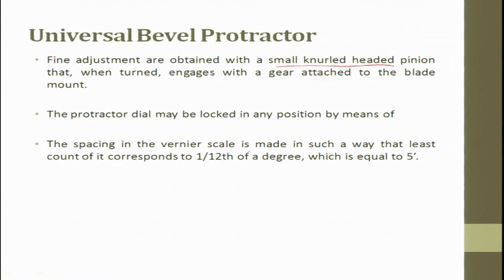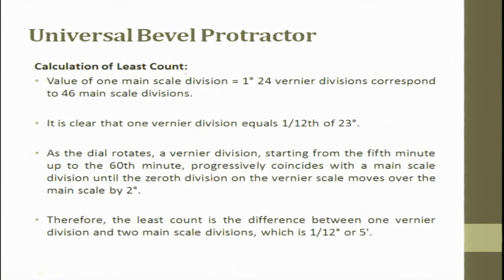The protractor dial may be locked. The spacing in the vernier is made such that the least count corresponds to one-twelfth of a degree, which equals 5 minutes. The least count is the difference between one vernier division and two main scale divisions, which is one-twelfth or five minutes. The vernier divisions start from the fifth minute up to the 60th minute, progressively coinciding with the main scale division until the zeroth division moves over two degrees.